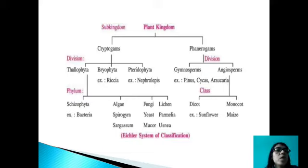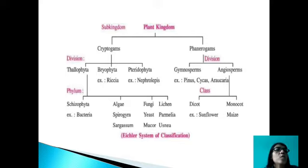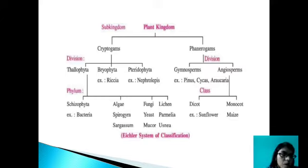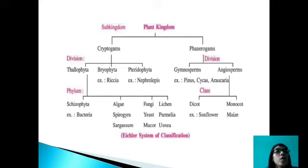Kingdom Plantae is differentiated into two sub-kingdoms: Cryptogames and Phanerogames. Cryptogames is a group of plant kingdom in which all the plants which do not produce flowers are placed — plants which possess no evident reproductive structures like seeds or flowers. And the second group is Phanerogames, in which all the flower-producing or seed plants are placed. The plants which possess evident reproductive structures or organs like seeds or flowers are placed in Phanerogames. Cryptogames and Phanerogames are further divided.